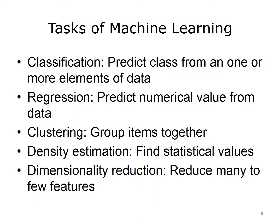There are a number of different tasks for which we use machine learning. One of the most common is classification, where we aim to predict the class from one or more elements of data. There is also regression, where we aim to predict a numerical value from the data. Another type of task is clustering, where we try to group various items together. There is also density estimation, where we attempt to determine how well the data fit a model statistically. Finally, there is dimensionality reduction, where we aim to take data sets of many dimensions and reduce them to fewer features for simplification or computational efficiency.